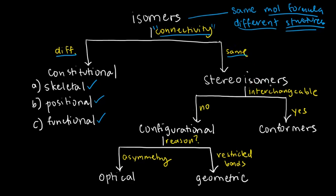Stereoisomers can be further divided by asking: is it interchangeable? Meaning, by just mere rotation or bending or twisting of bonds, can I convert one stereoisomer into the other? If yes, we have conformers or conformational isomers. If no — I cannot just twist or rotate bonds to convert one isomer to another — then we call those configurational isomers.